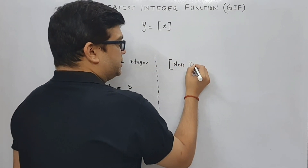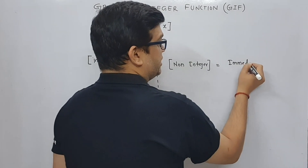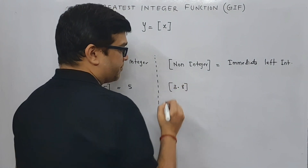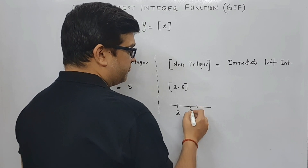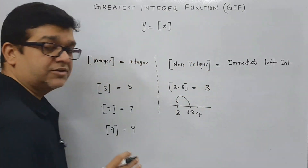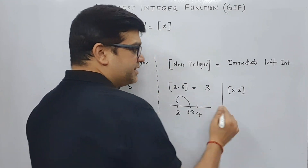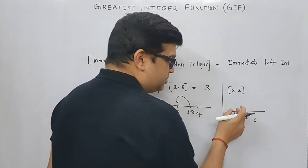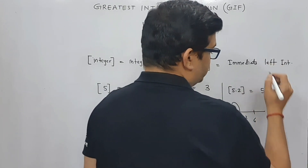Now if we come across a non-integer inside this box, then the answer would be the immediate left integer. For example, 3.8 is a non-integer. Since 3.8 lies between three and four, the answer is the immediate left side integer. Similarly, box of 5.2 — since 5.2 is a non-integer lying between 5 and 6 — box of 5.2 will be the immediate left side integer, which is 5.